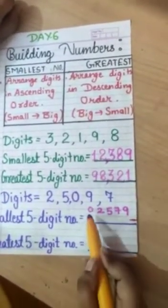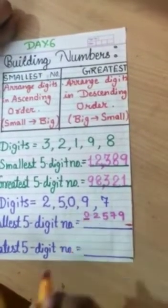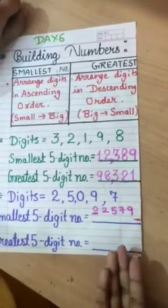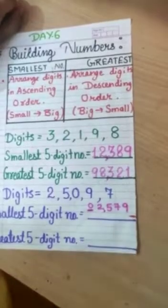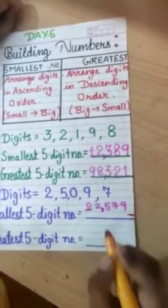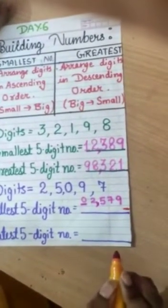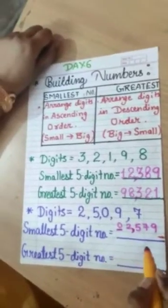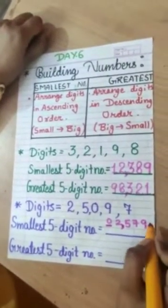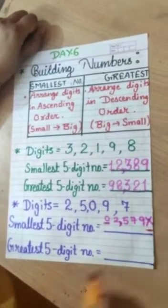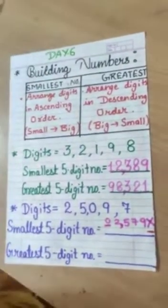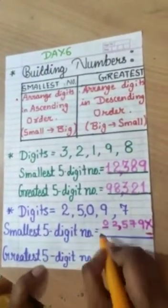But what happened? If I put 0 at the first place, it's only becoming 2,579. Do you think is it a correct number? No, because it doesn't become a 5 digit number. It has become a 4 digit number. So, it is a wrong answer. We will not take like this. Let's reverse the digits.